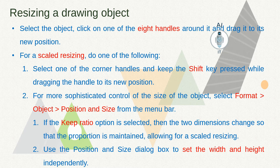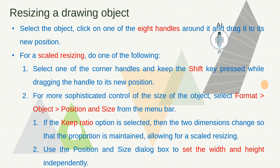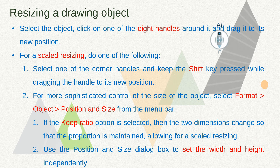For a scaled resizing to maintain the proportions, there are two methods. The first is to hold the shift key and drag from one of the corners. The second is to go via Format > Object > Position and Size from the menu bar, check the keep ratio option, and you can optionally set the width and height independently. This way the proportions of the object are maintained.